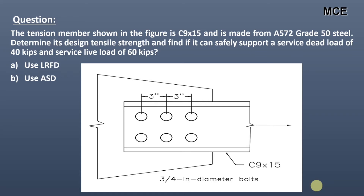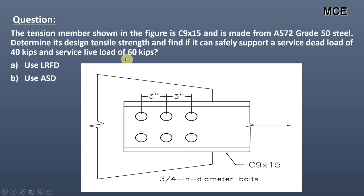Welcome to Master Civil Engineering. In this video, we're going to learn how to calculate the design tensile strength of a tension member and check its adequacy against given loads according to AISC specifications. The problem states that the tension member shown in the figure is C9×15, made from A572 Grade 50 steel. We must determine its design tensile strength and check if it can safely support a service dead load of 40 kips and service live load of 60 kips, using both LRFD and ASD.